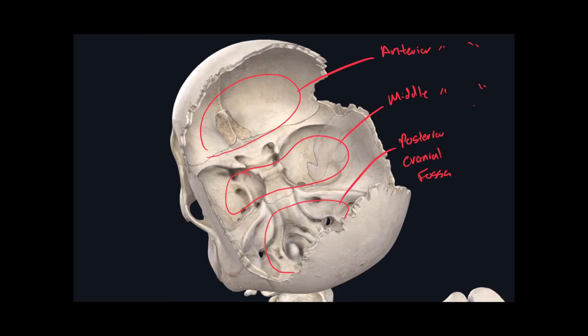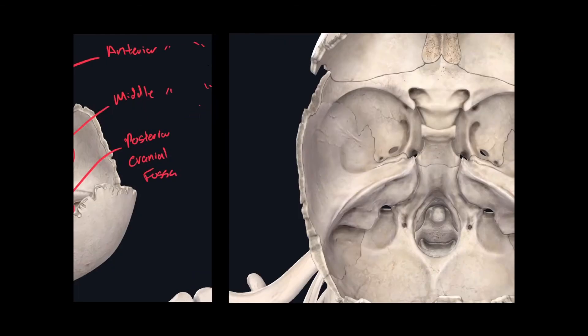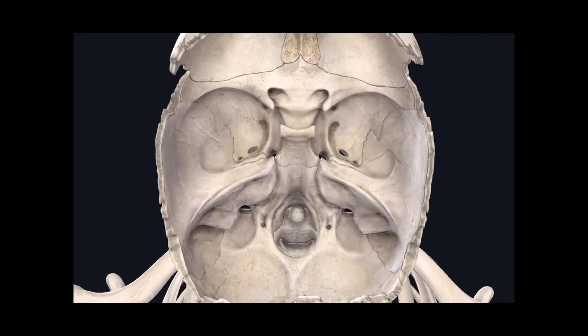These depressions help make room for certain parts of the brain that we'll learn when we go over the nervous system. From this view, we can actually see quite a few holes that we've already learned — in the sphenoid bone as well as in the occipital bone. However, there are a couple of spaces that were created as two bones come together, and we're going to learn those right now.